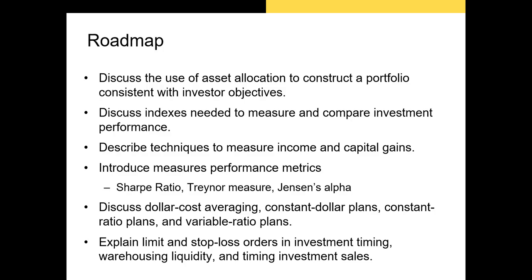In this section I'll discuss how to manage your own portfolio. I've broken this section into three parts. In this first part I'm going to give a basic overview of how we use asset allocation to construct a portfolio consistent with your objectives. Next we'll discuss the indexes we use as benchmarks. In the second video we'll discuss techniques to measure income and capital gains for several asset classes, then performance metrics like the Sharpe ratio, Treynor measure, and Jensen's alpha. In the third video I'll discuss dollar cost averaging, constant dollar plans, variable ratio plans, and other ways to time the market using limit orders, stop-loss orders, or timing investment sales.